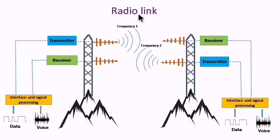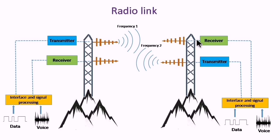The radio link consists of an antenna, which radiates or detects electromagnetic waves; a transmitter, which modulates the signal to higher frequency and feeds it to the antenna; and a receiver, which converts the radio frequency signal back to data or voice.